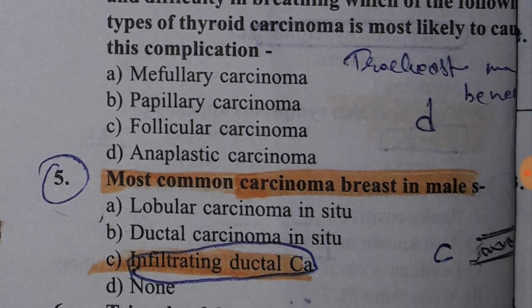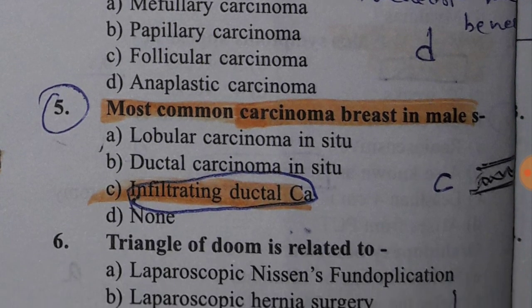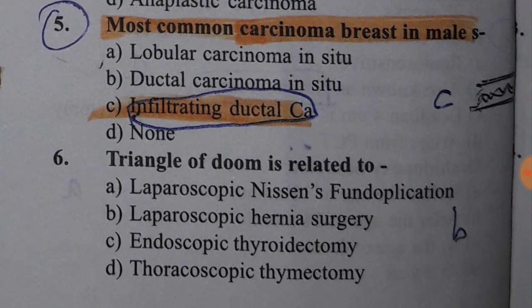Most common carcinoma of the breast in males is infiltrating ductal carcinoma. Triangle of doom is related to laparoscopic hernia surgery — you should know the boundaries. This completes your five-minute break. I will be continuing with other videos on important topics. Thank you, stay motivated and study hard.